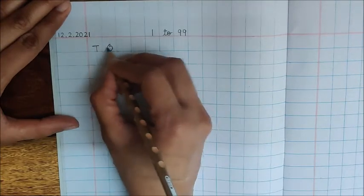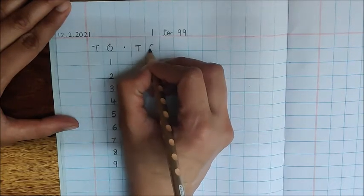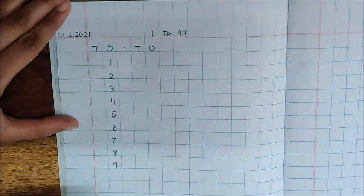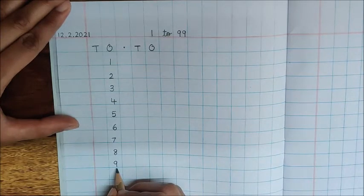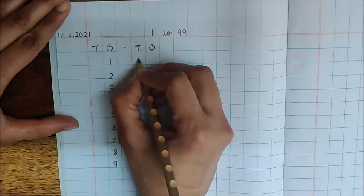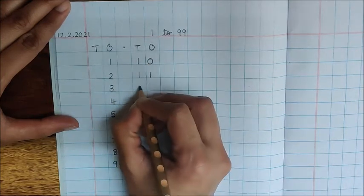After this T.O., put a dot, again write down T.O. yourself. Children, you will do the T.O. setting yourself.